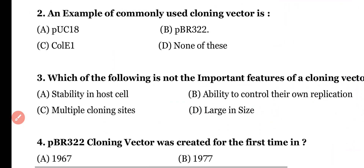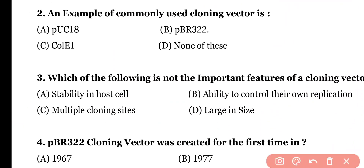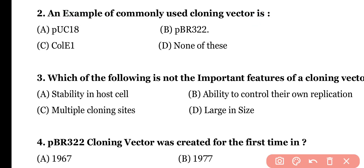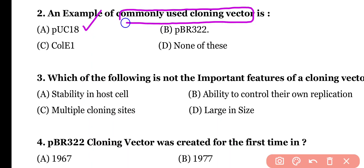Question 2. An example of a commonly used cloning vector is: PUC-18, PBR-322, COL-E1, or none of these. Correct answer is option A. PUC-18 is a commonly used cloning vector.